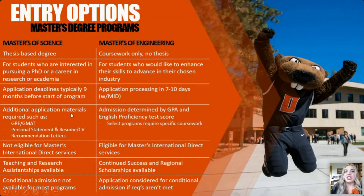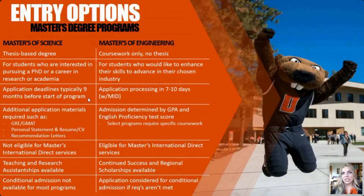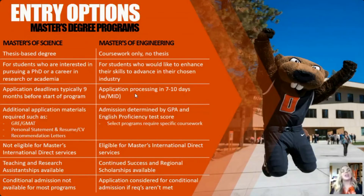When it comes to application deadlines, the differences are pretty significant. The MS thesis-based degree programs have application deadlines typically starting about nine months before the start of the program — for example, applying by December 2021 for fall 2022 term. But for the master's of engineering, it's a much faster turnaround — you'll find out within 10 days if you were accepted, so there's a lot less stress not having to wait nine months to find out if you got in.